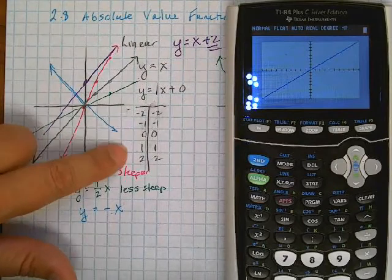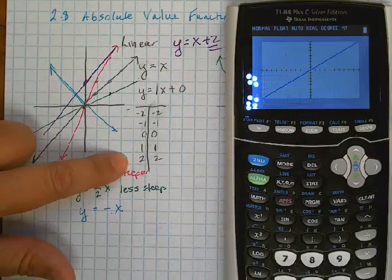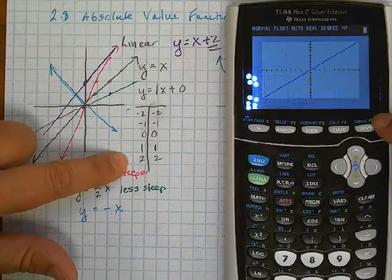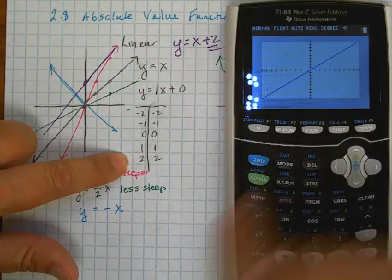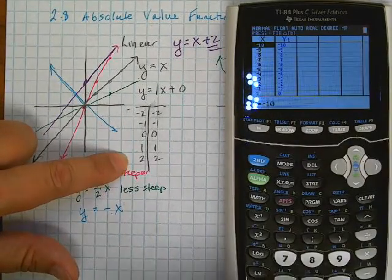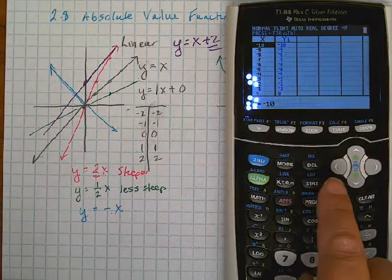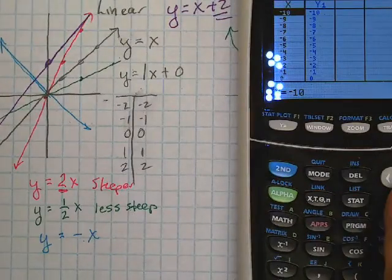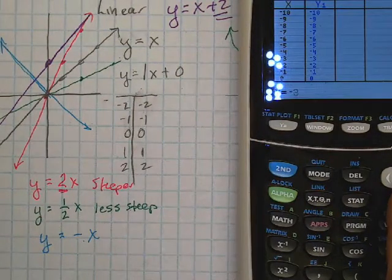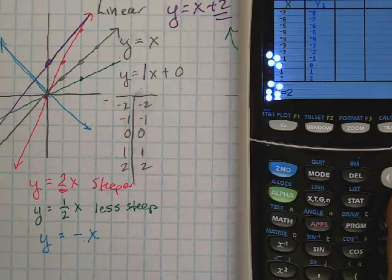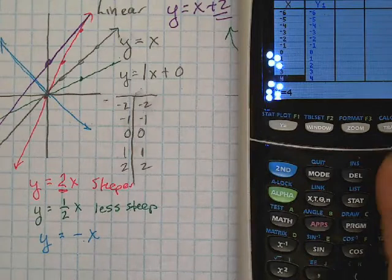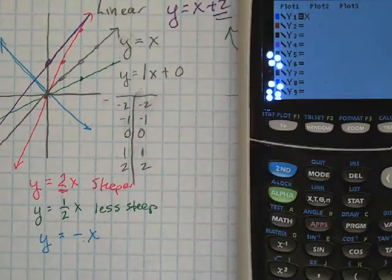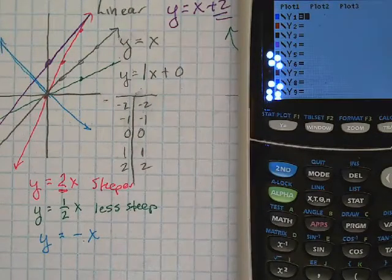We can look at the table for this graph. If you'll look right above the word graph, it says table in blue. You can push second graph, and then it's going to show you the table that goes along with it. You can see here the X and the Y values all along this table are the same because our graph is Y equals X. Let's go back to the graph, so push Y equals again.